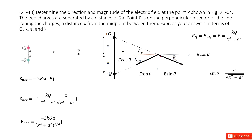Now we can see for this picture, for vectors E_q and E_negative_q, after we project them into x-component and y-component, the x-component E cosine theta cancels with the E cosine theta from E_negative_q, because they are equal in magnitude but opposite in direction. So the only surviving terms are the y-components, and we can write it as a vector 2E sine theta, pointing in the negative y-direction. The negative sign tells us it is pointing downward.